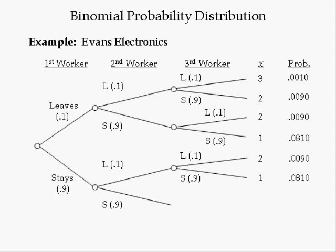Given the first two workers stay, the third could stay or leave. If the first two workers stay but the third leaves, X equals 1. The probability of stay and stay and leave equals 0.9 times 0.9 times 0.1, which is equal to 0.0810. If all three workers stay, X equals 0. The probability of stay and stay and stay equals 0.9 times 0.9 times 0.9, which is equal to 0.7290.